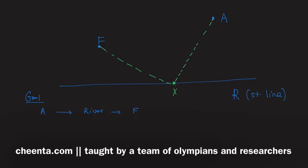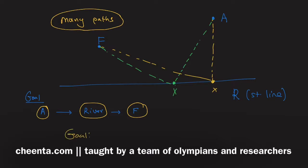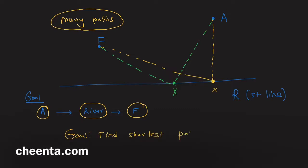Maybe you can go straight from point A to the river and then from that point to F. So there are many paths from A to the river and from the river to F.